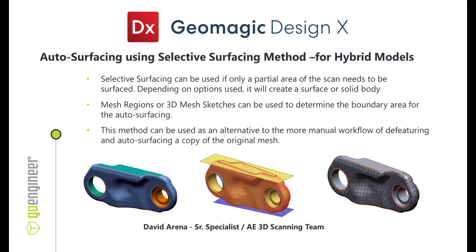We're going to look at a sub-method of auto-surfacing inside of DesignX called selective surfacing, which is used if only a partial area of the scan needs to be surfaced. Depending on the options used, we can create a surface or solid body. Mesh regions or 3D mesh sketches can be used to determine the boundary area of the auto-surfacing.